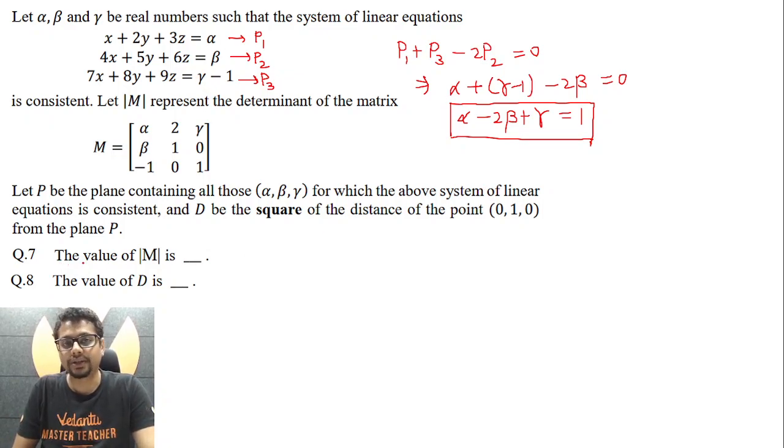Now coming to this question 7, value of determinant of m, if you expand determinant of m, you essentially get alpha minus 2 beta, check it out, plus gamma. And that essentially is 1 because alpha minus 2 beta plus gamma equal to 1.